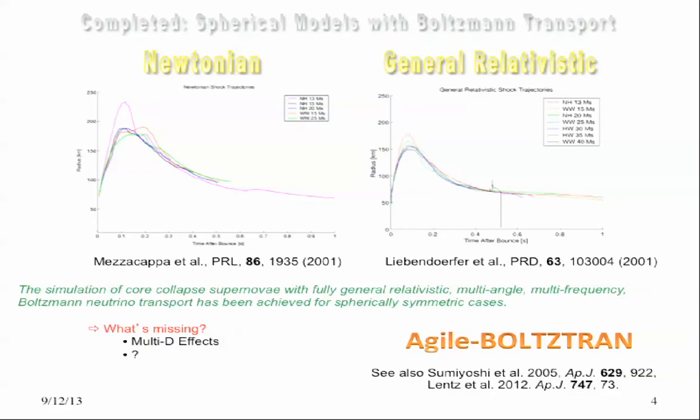This was accomplished in 2001. We started modeling supernovae in 1966. So it took, what, 36 years to get to the point where we could do the multi-angle, multi-frequency treatment in spherical symmetry in this problem. And it's going to be a long time before we can do this in 3D. Okay? So this just to frame the problem.